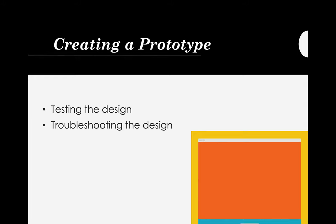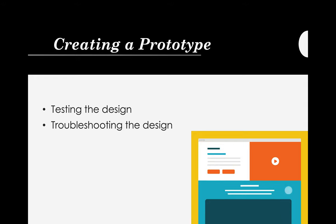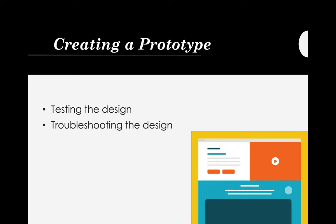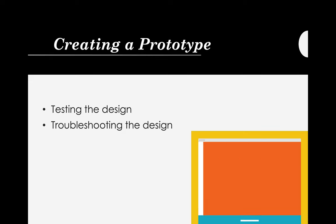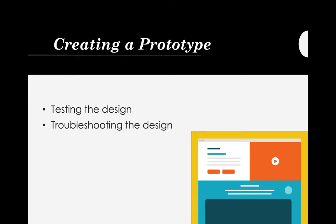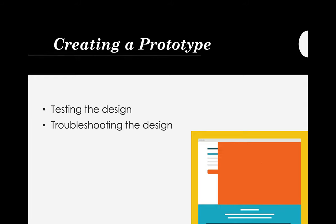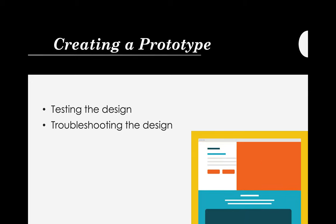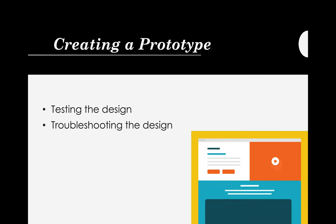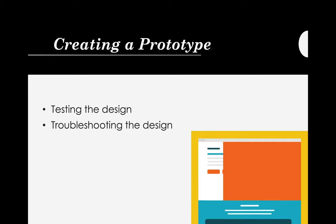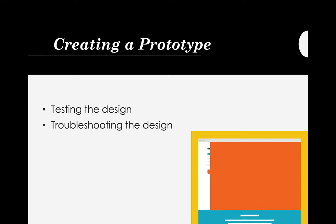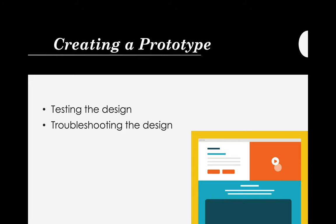The third process or phase is creating a prototype. After defining the problem and researching and designing the solution, we will now create our prototype. In creating our prototype, we need to test it. If the design is good, all you need to do is validate it by informing the stakeholders or getting approval from your user. We also need to troubleshoot the design if it is not effective.